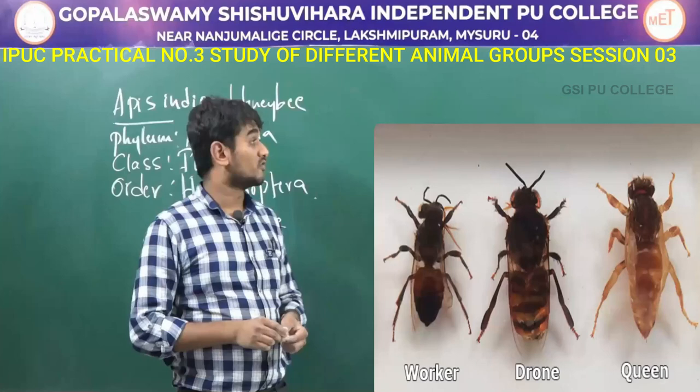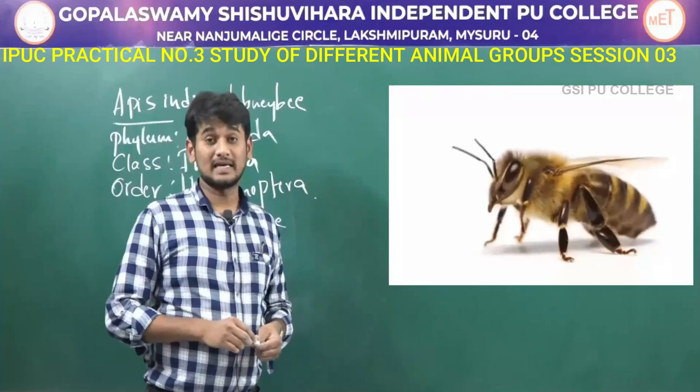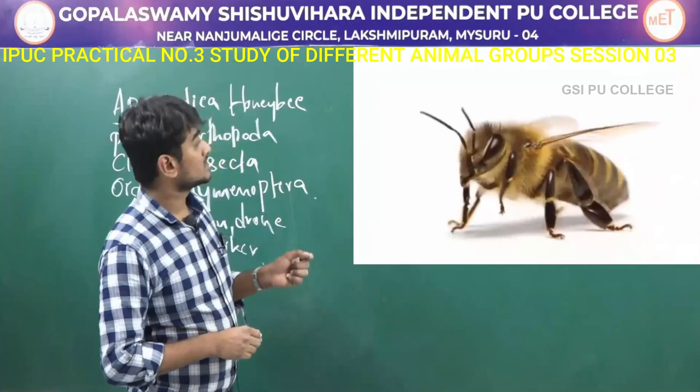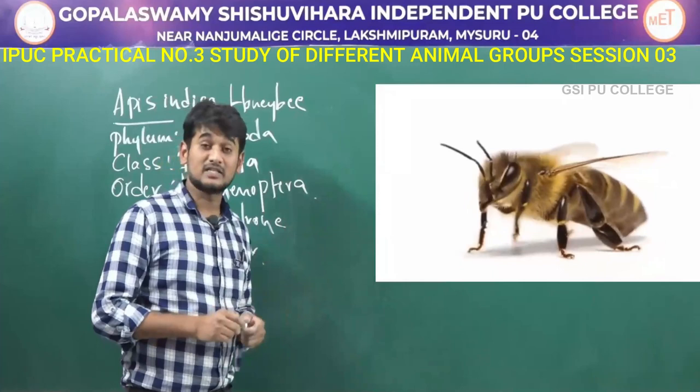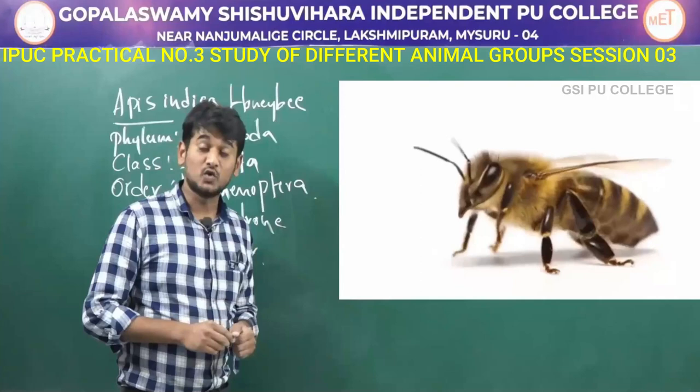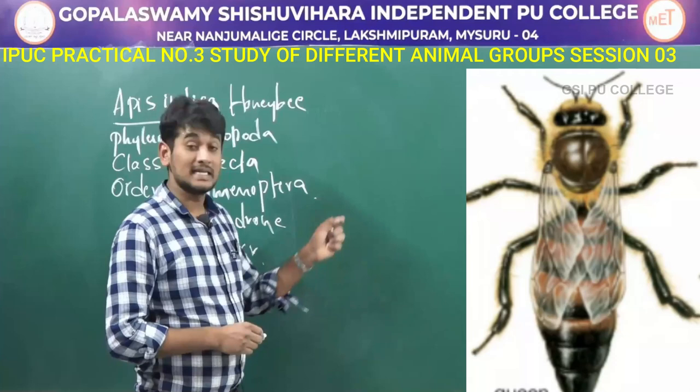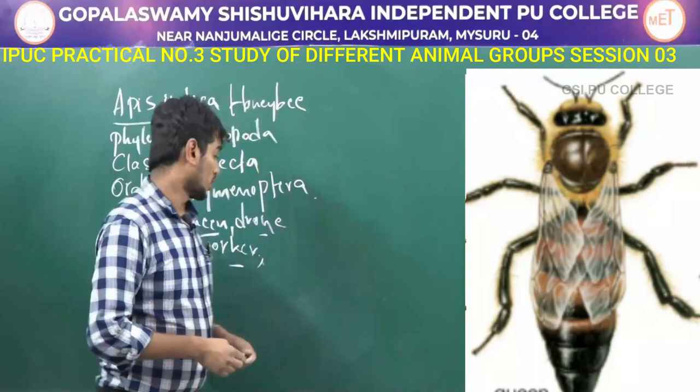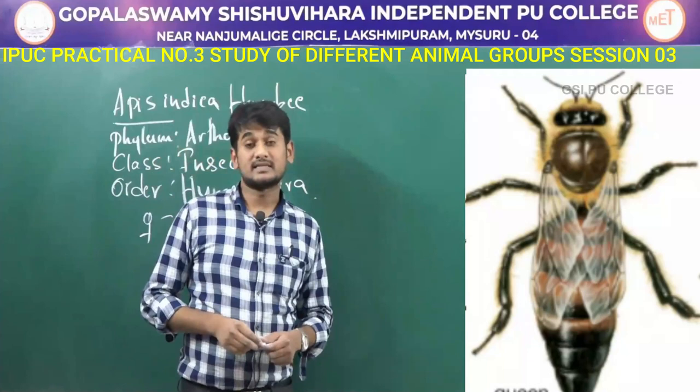The body contains a head, and the thorax has prothorax, mesothorax, and metathorax. Each thorax segment has a pair of legs. Wings are attached to the meso and metathorax, and there are six segments in the abdomen. The queen is the one and only fertile female honeybee, which is larger in size with a longer abdomen but smaller eyes, wings, and legs.